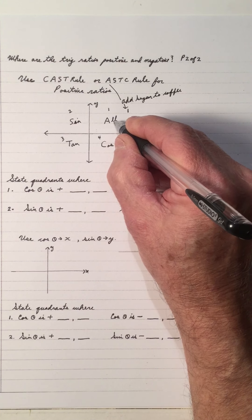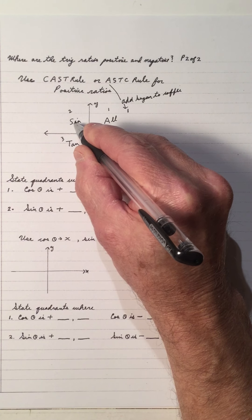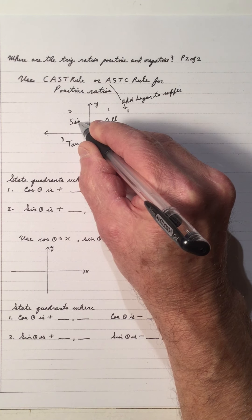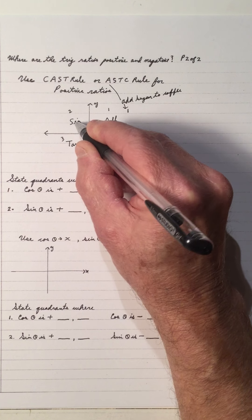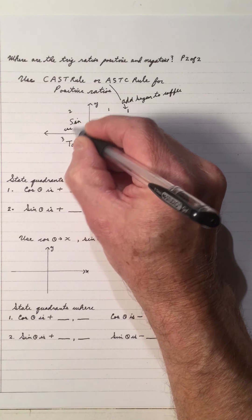So everything is positive in quadrant 1 because this is all. Sine is positive in quadrant 2, and also if you think of its reciprocal, cosecant is positive.